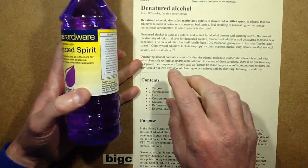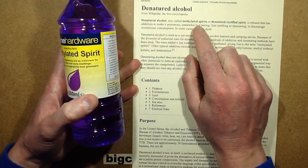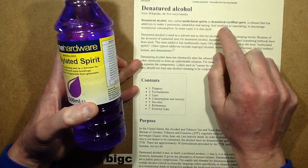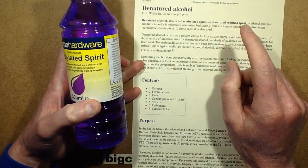It says denatured alcohol, also called methylated spirit or denatured rectified spirit, is ethanol, which is the drinking alcohol, that has additives to make it poisonous.